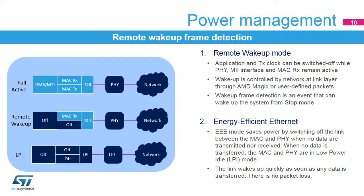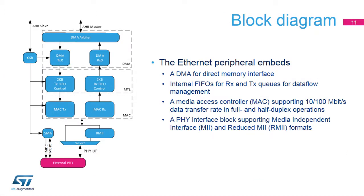Energy-efficient Ethernet mode is available only in full-duplex at 100 megabits per second with the MII interface. This slide presents the peripheral block diagram. The Ethernet peripheral embeds two direct memory interfaces for receive and transmit paths with an internal arbiter, internal FIFOs for RX and TX queues for data flow management, a media access controller or MAC supporting most functional features detailed in previous slides, offload engines, precision timing protocol, power management or PMT, and MAC management counters for statistics gathering, and a PHY interface block supporting MII and reduced MII.